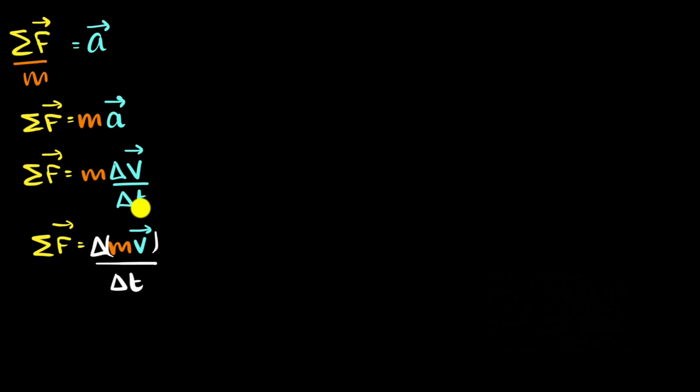Now at this point, you may be like, whoa, what just happened? Why did you put that m inside? How are we allowed to do that? And I say that's a great question. Always ask questions whenever a step doesn't make sense to us. So let's look at it. What does this really mean? If we were to expand that, it basically means mass times change in velocity is final velocity minus initial velocity divided by the time taken for that change, right?